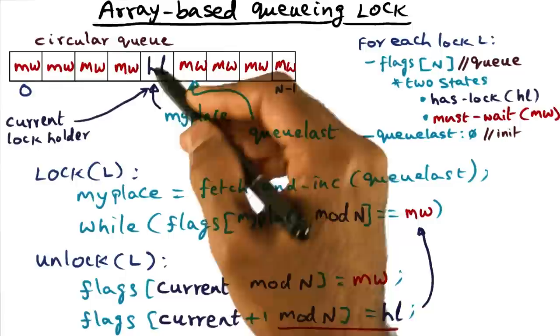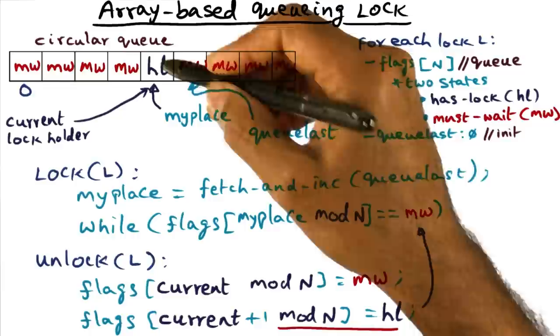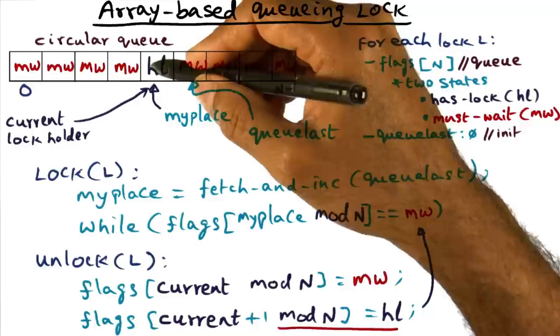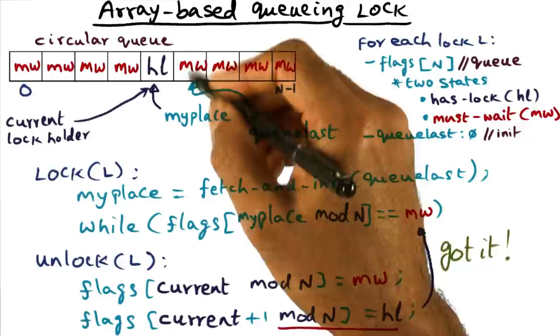Because basically, he's going to set the flags array, the next spot in the flags array, as HL. And that's the spot I'm waiting on. So good news for me. I've got my position marked as HL. And what that means is that now I've got the lock.